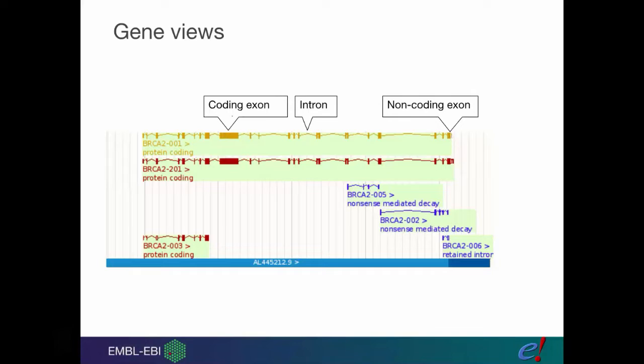I can tell that this gene is forward-stranded, and there are three things showing that to me. The first thing is this little arrow which is pointing in the direction of the transcription. The second is the position of the gene in reference to the contig.